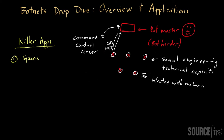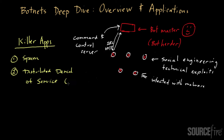The first killer app I mentioned in the last video was spam. Another big application of a botnet, from the perspective of the bot herder, is distributed denial of service attacks, also referred to as a DDoS attack. The idea behind a DDoS attack is that the bot herder commands all of his nodes to simultaneously bombard a target system.